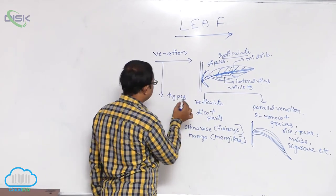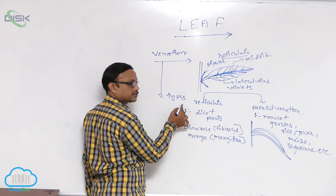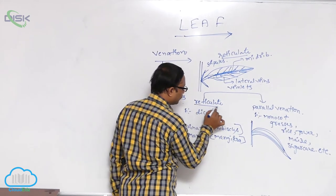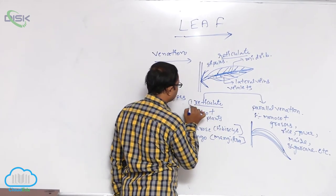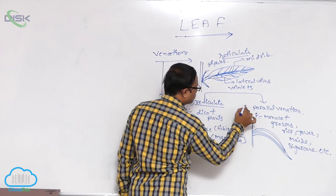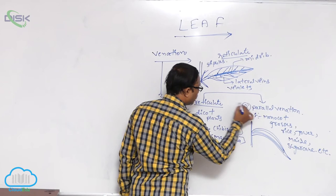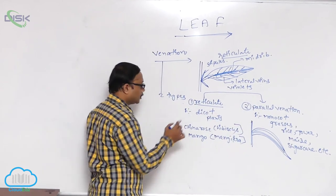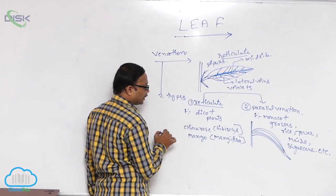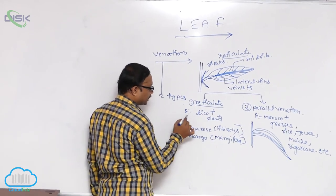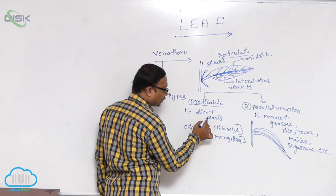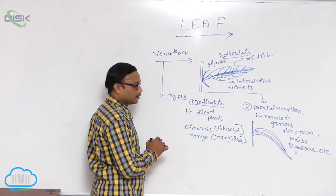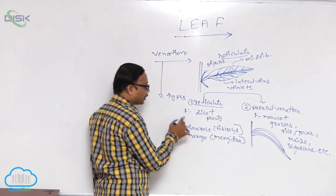Venation is of two types. The first one is reticulate venation, and the second one is parallel venation. Reticulate venation is generally seen in dicot plants.